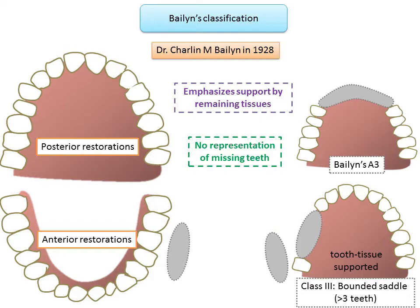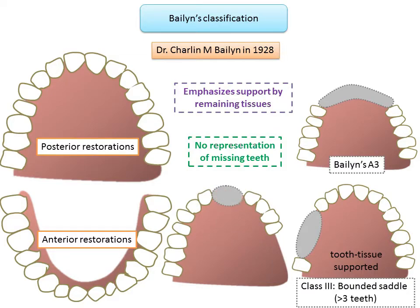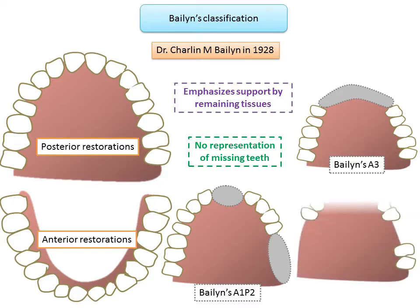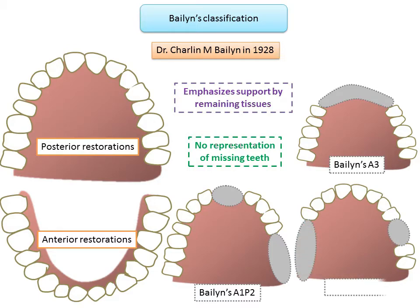In this image there is an edentulous area in the anterior region with two teeth missing and an edentulous area in the posterior region with about three teeth missing, so this will be Balen's A1 P2. In this image there is a free-end saddle: on the right, about two teeth are missing with supporting teeth present anterior and posterior — this will be P1 — and on the left there is a free-end saddle, corresponding to P2. So this classification would be Balen's P1 P2.